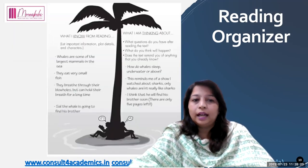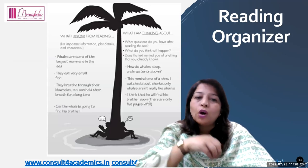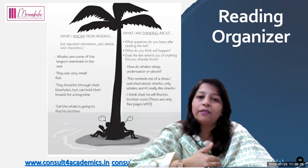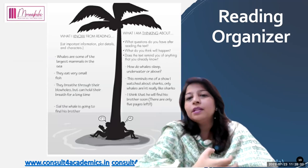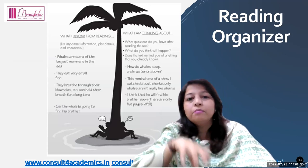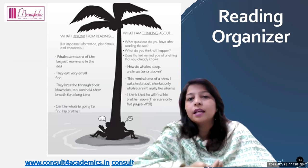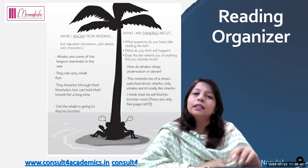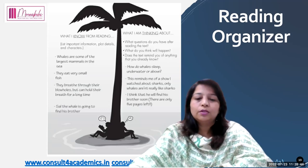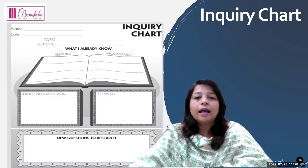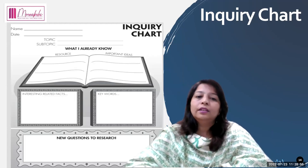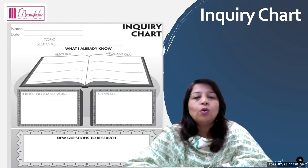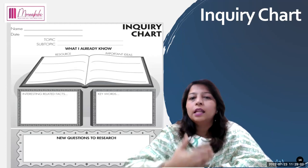Next is a reading organizer. They have to write what I know from the reading, list different points, and what I am thinking about — making notes on what they know and what questions are arising in their mind, and how they relate this information to their previous knowledge. Moving ahead, this is an inquiry chart: what I already know, resources and important ideas, interesting related facts, different keywords, and new questions to research.